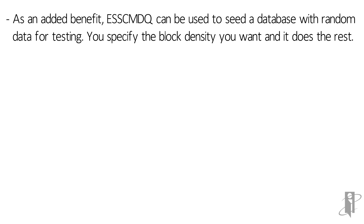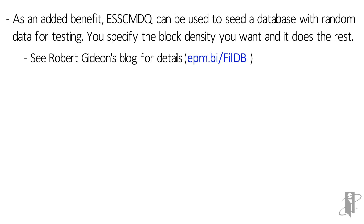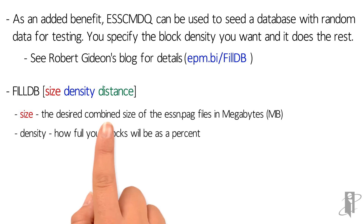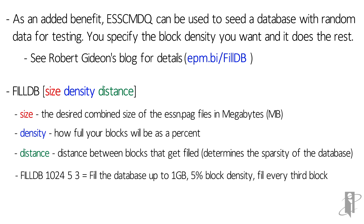As an added benefit, S-Command-Q can also be used to seed a database with random data for testing. You specify the block density you want and it does the rest. I got this information from Robert Gideon's blog. Basically, you do a 'fill database,' give it the size, the density, and the distance. You can tell it 'I want to fill up a gig's worth of data,' and it will randomly put in numbers at those intersections.